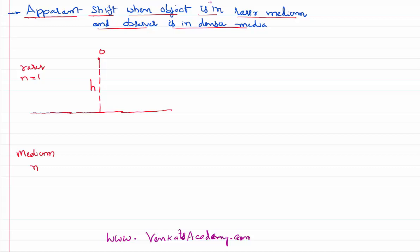The observer is in the denser medium and has to see the light. The light ray moves from the object, strikes the boundary separating the two media — this is the angle of incidence. If there were no change in media, it would continue the same path, but because of the change of media, as the light ray moves from rarer to denser medium, it moves towards the normal. This is the angle of refraction.